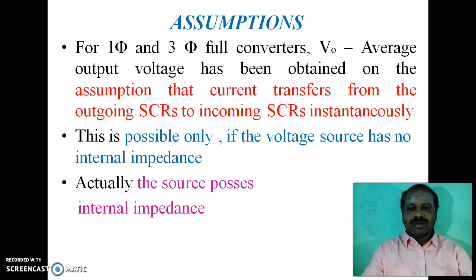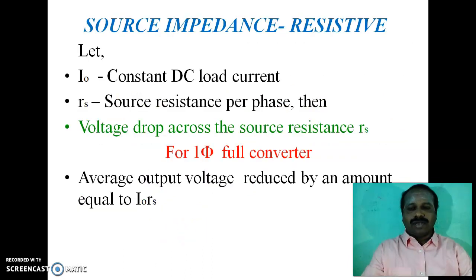Assumptions: For single-phase and three-phase full converters, in order to derive the average output voltage, we made an assumption that the current transfers from the outgoing SCR to incoming SCR instantaneously. There is no time delay for the transition of current from outgoing SCR to incoming SCR. This is possible only if the voltage source has no internal impedance, but a practical source always possesses internal impedance. First of all, we consider the source impedance as resistive. Let I0 be the constant DC load current and RS be the source resistance per phase.